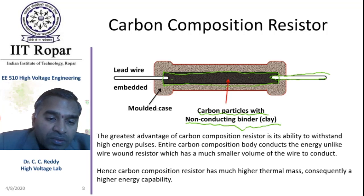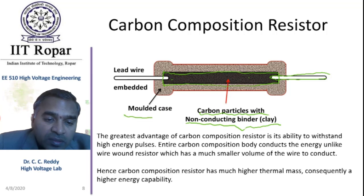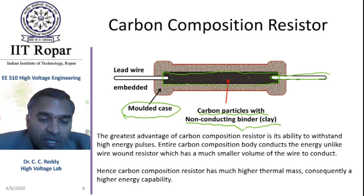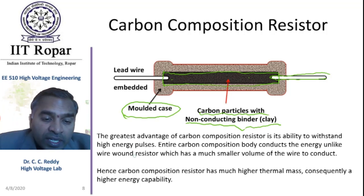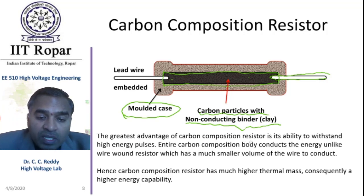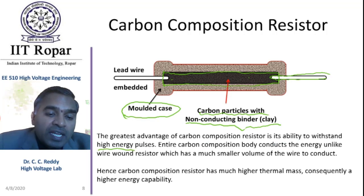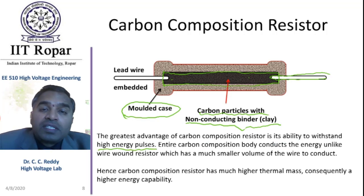The entire core is put in a molded case, which is normally of ceramic or sometimes plastic. The greatest advantage of carbon composition resistors is their ability to withstand high energy pulses.